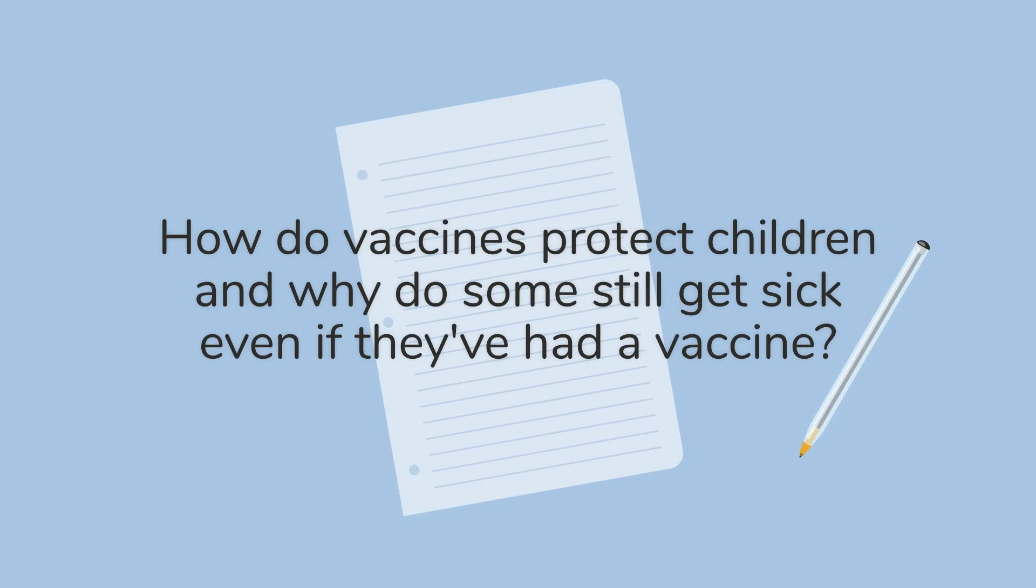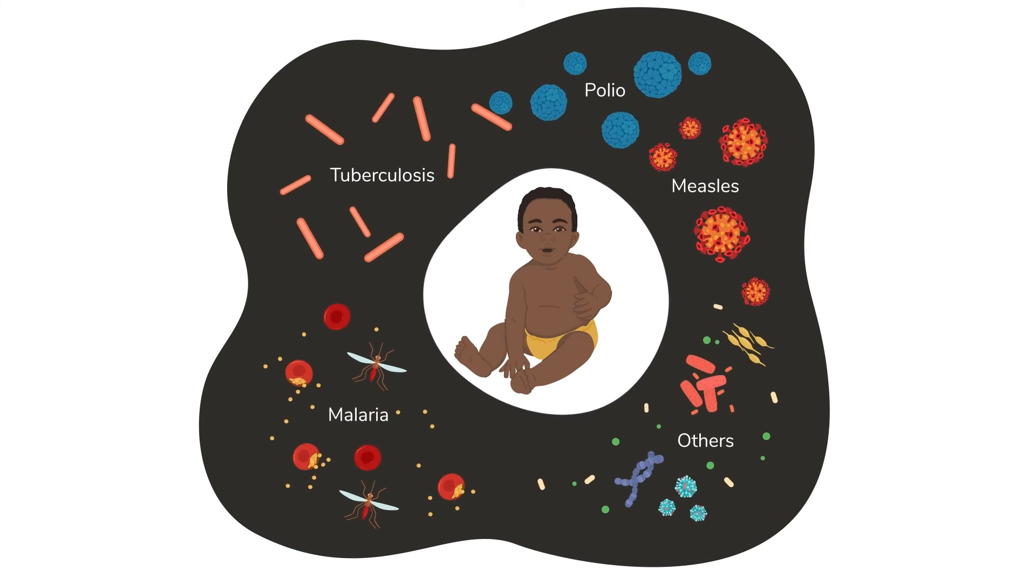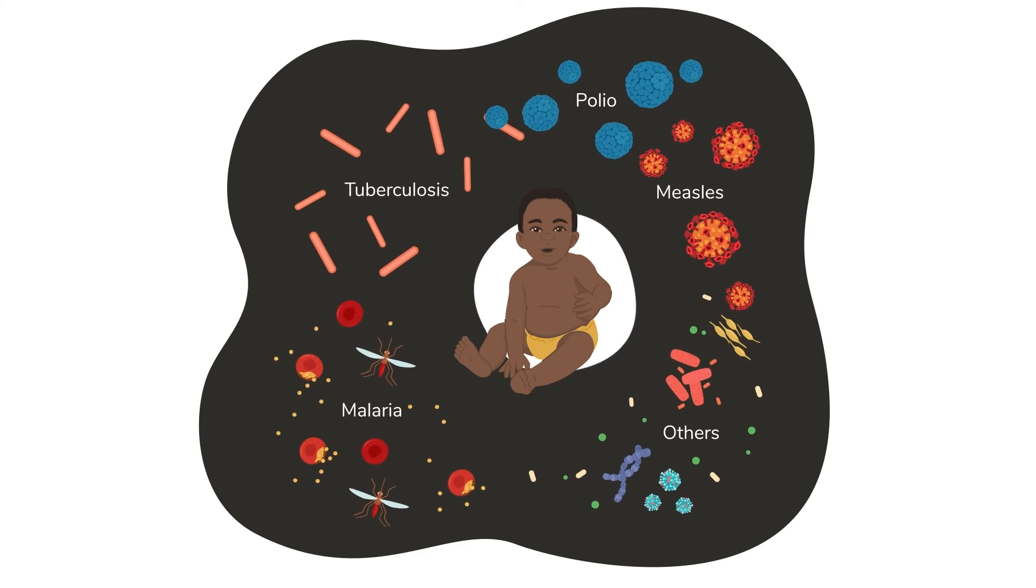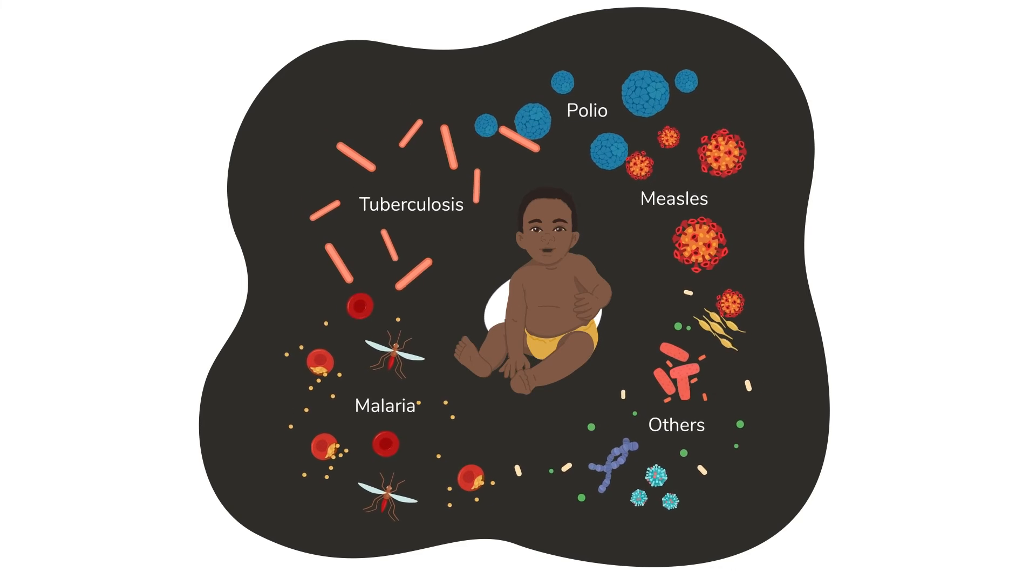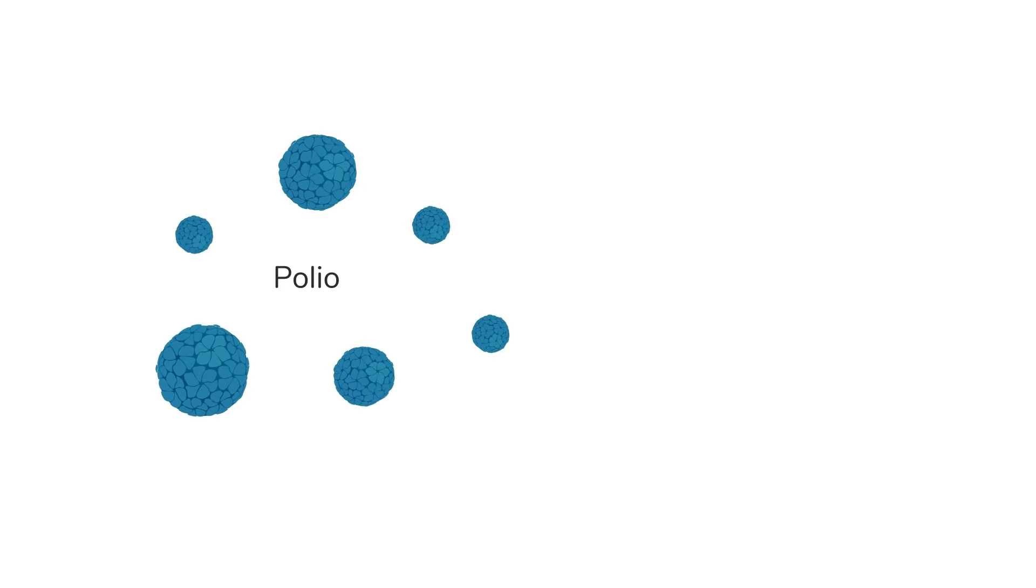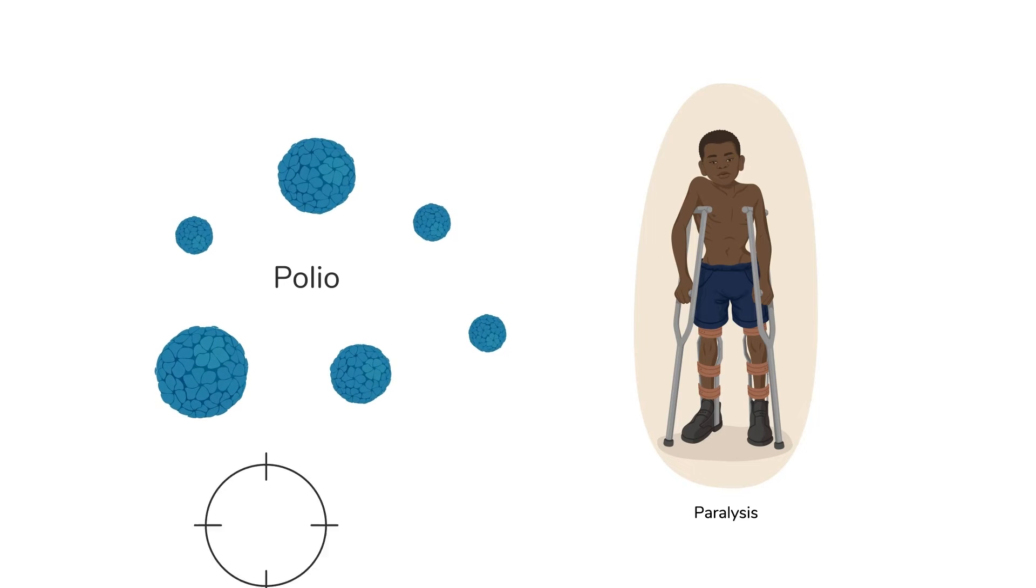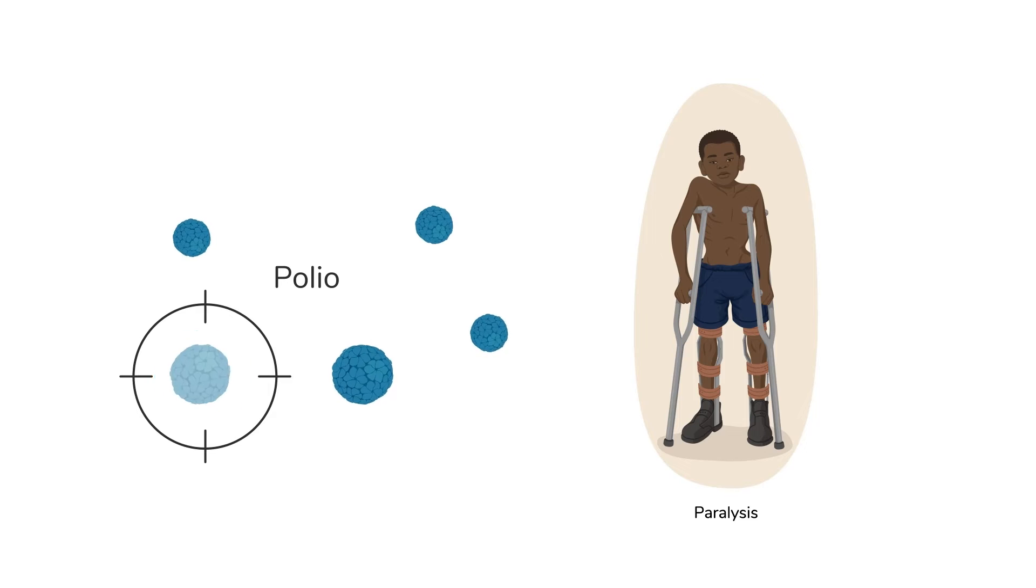How do vaccines protect children? And why do some still get sick even if they've had a vaccine? Children will encounter many germs throughout their lives and may not be able to fight them off on their own. An example is polio, which causes severe disability or not being able to walk, trouble breathing, and even death. A vaccine teaches the body to recognize and fight off this germ before it causes a severe illness with lifelong consequences.